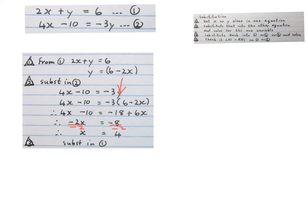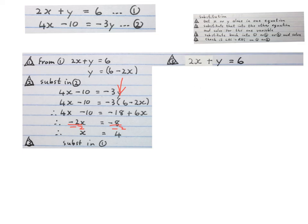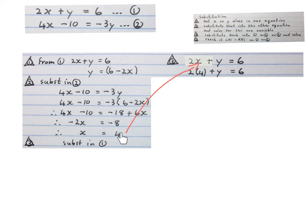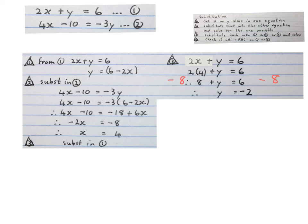Substitute X equals four back into equation one. Write down equation one, replace X with four, and solve for Y. Two times four is eight; minus eight on both sides gives Y equals minus two. The heading was solve for X and Y, and we have that: X equals four and Y equals minus two.